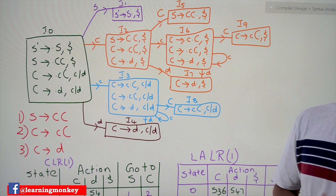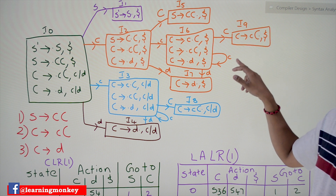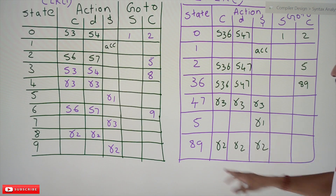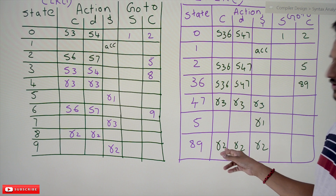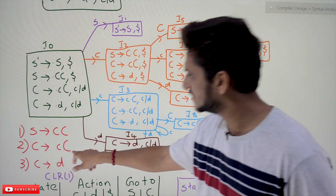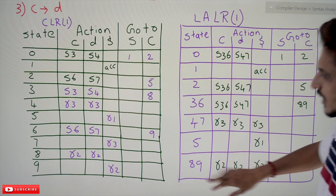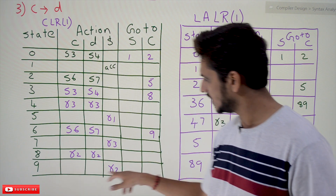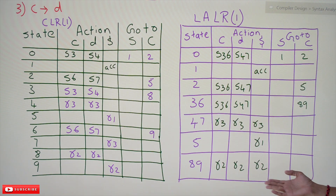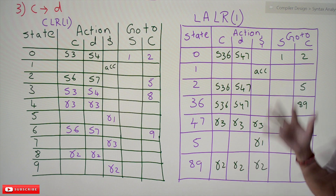So in LALR(1) parsing we are going to combine these two states, making them a single state. The reduce action has to be written on the look-ahead symbols. We are combining eighth and ninth state into a single state — written as state 8-9. The action is reduce to second production, because C tends to small c capital C is the second production. In our CLR(1) parse table, eighth state had r2 on c and d, and ninth state had r2 on dollar. Combine those two and write r2 in all positions: c, d, and dollar.